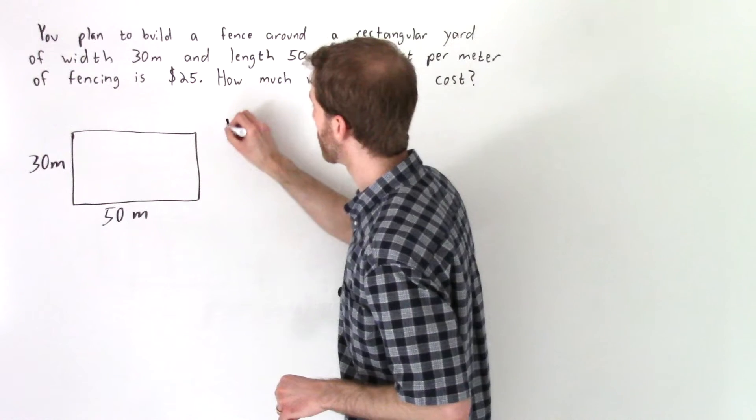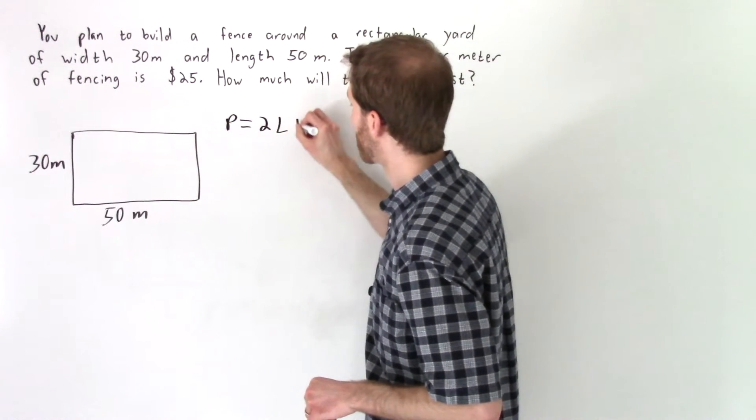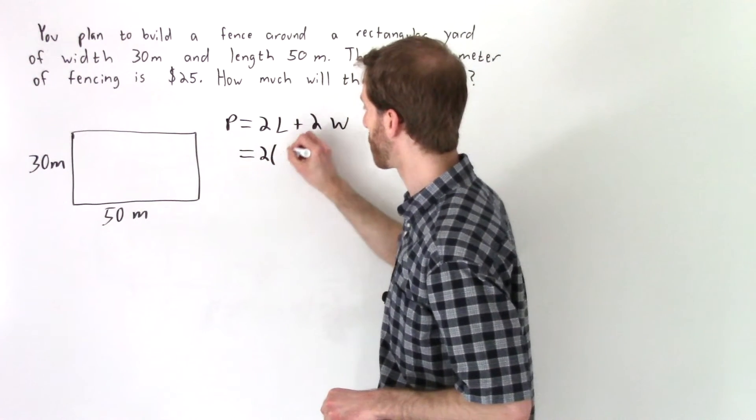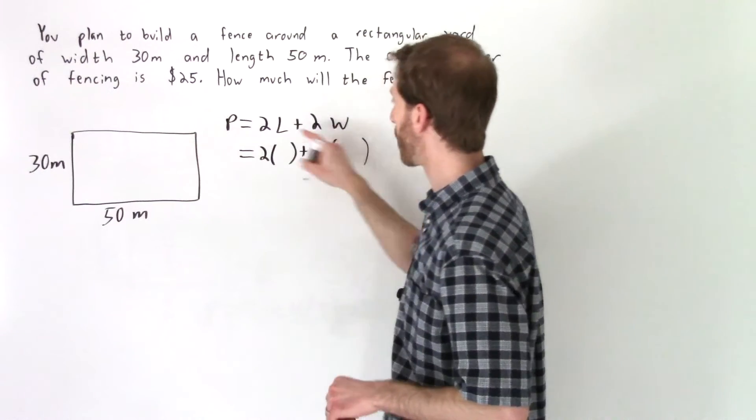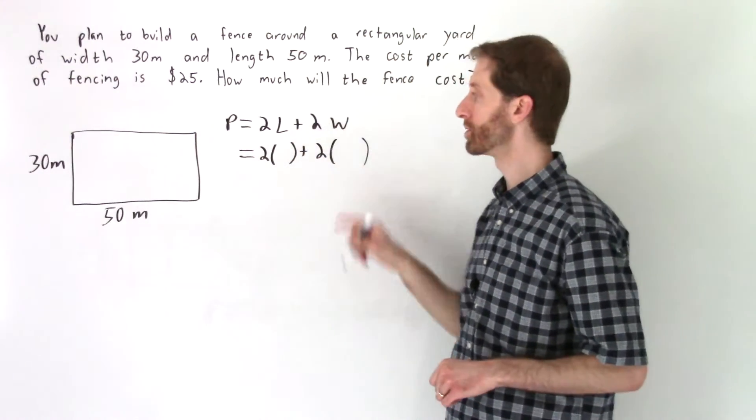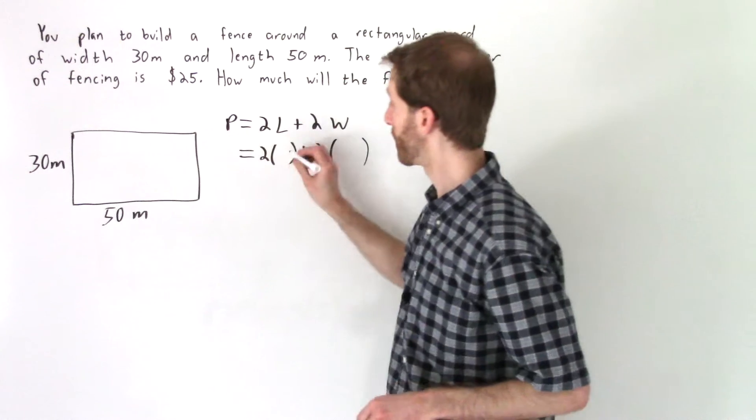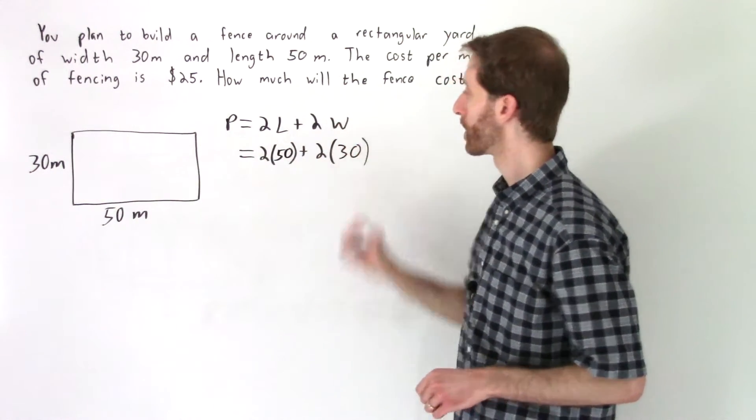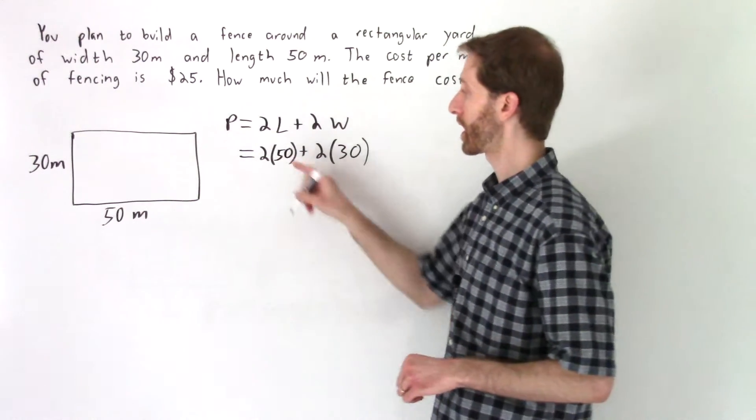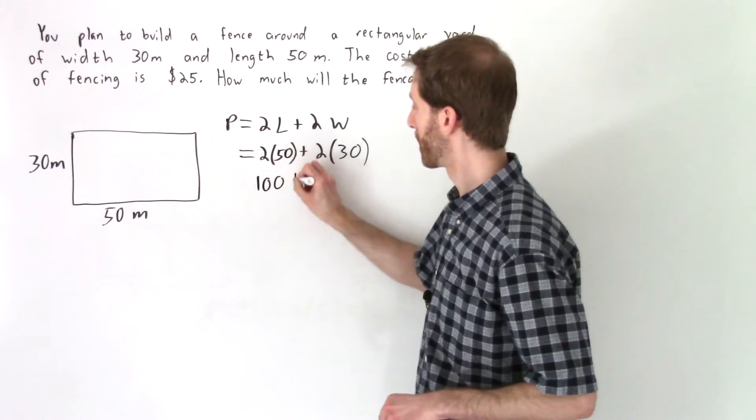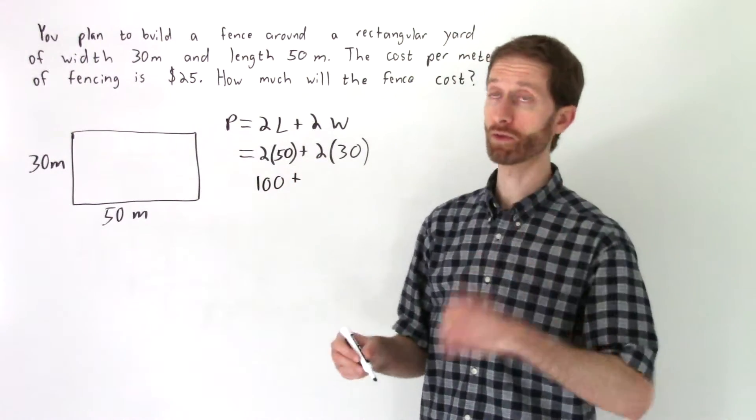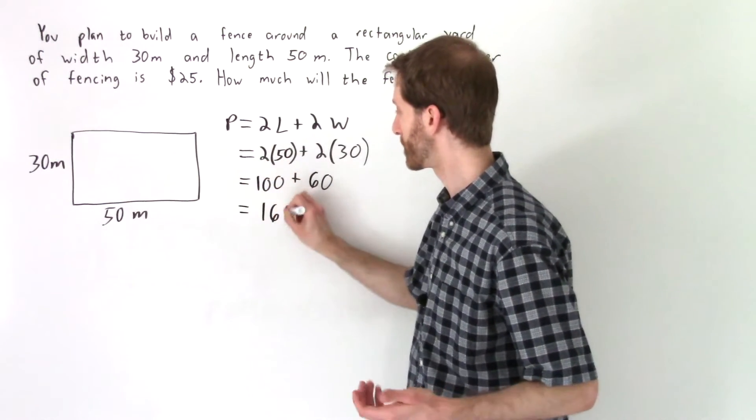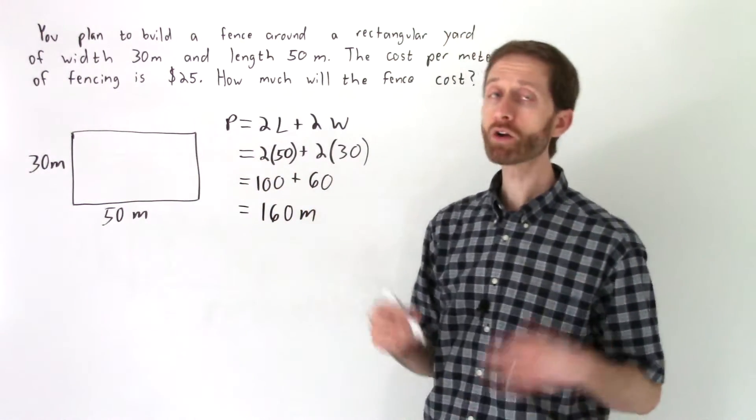The perimeter formula is twice the length plus twice the width, which will be equivalent to two times, and I like to put parentheses here to symbolize both the L value and the W value we'll be plugging in. Well our length is 50 and our width is 30. 2 times 50 is 100 plus 2 times 30 is 60. So our perimeter is equal to 160 meters.